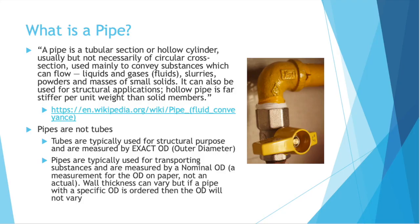What is a pipe? A pipe is a tubular section or hollow cylinder, usually but not necessarily of circular cross-section, used mainly to convey substances which can flow — liquids and gases, fluids, slurries, powders, and masses of small solids. It can also be used for structural applications. Hollow pipe is far stiffer per unit weight than solid members.